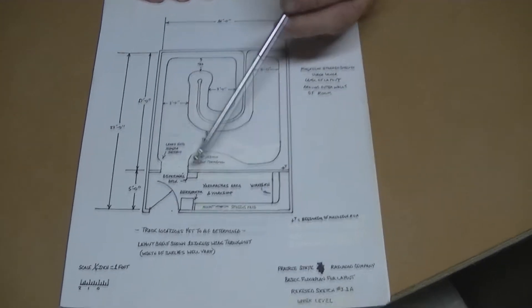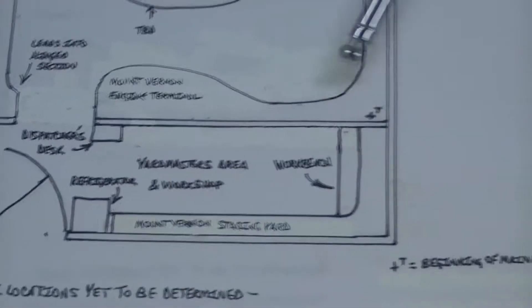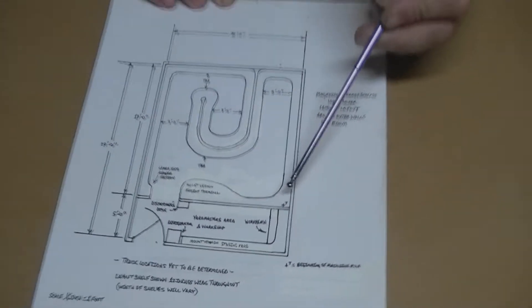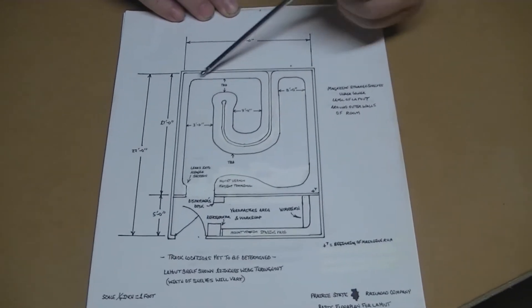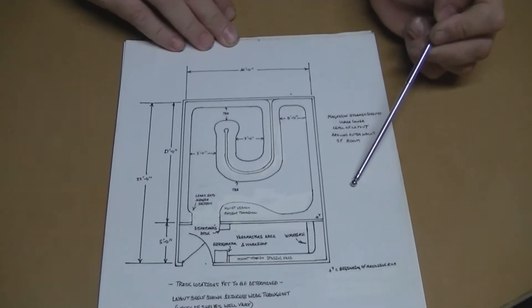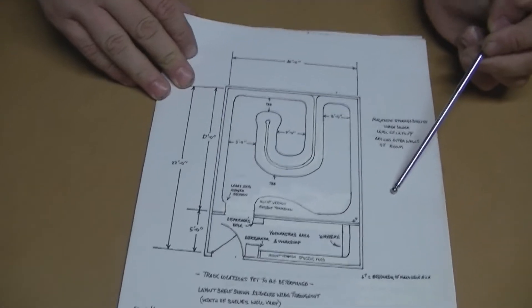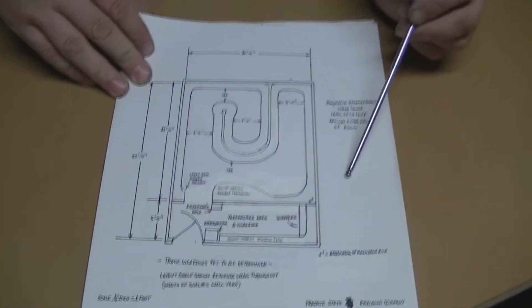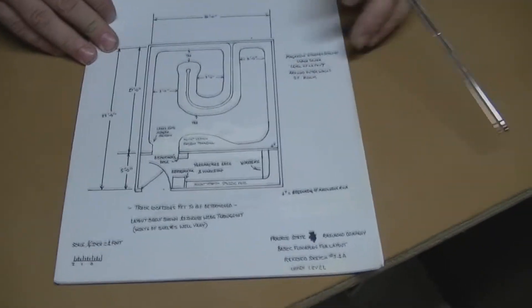This is before I even moved the entrance to the layout room to the center of the room. This is almost a hundred foot around once. If it goes around three times that's about 300 foot, 33 foot to a mile basically in N scale. So we're talking close to nine scale miles of track.